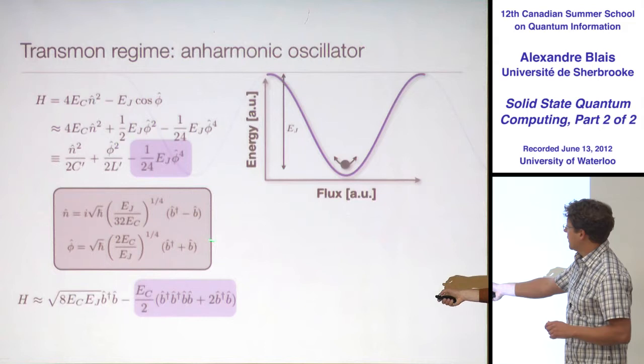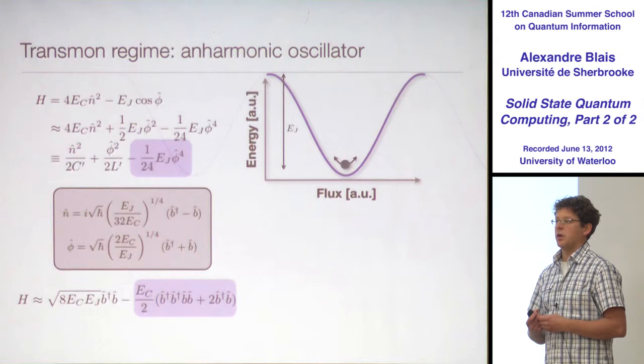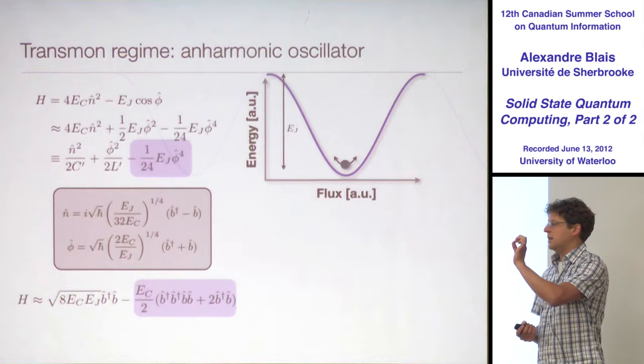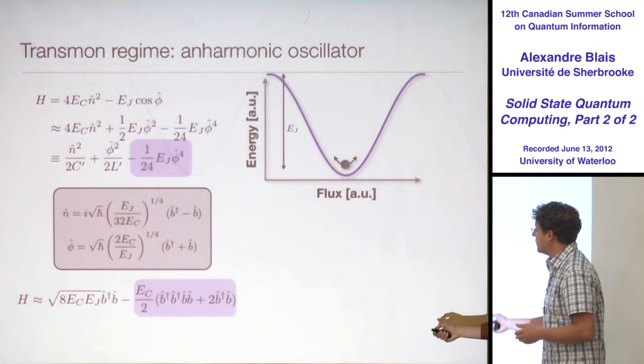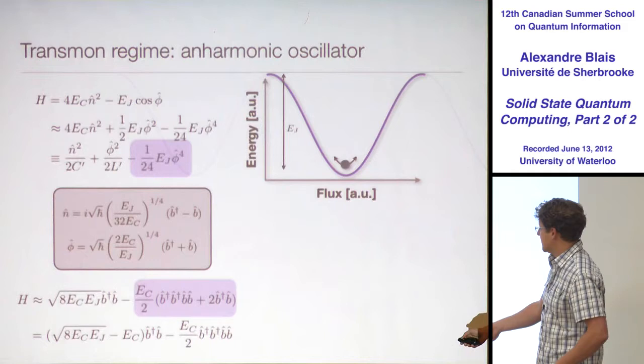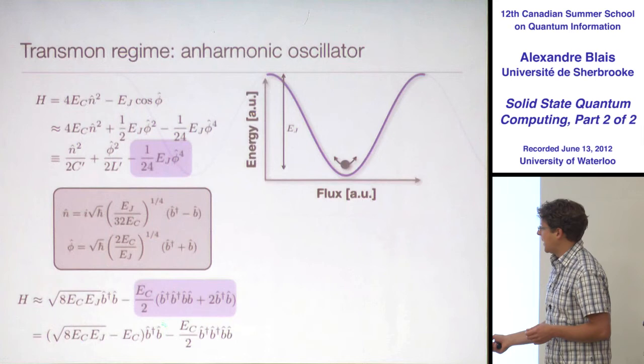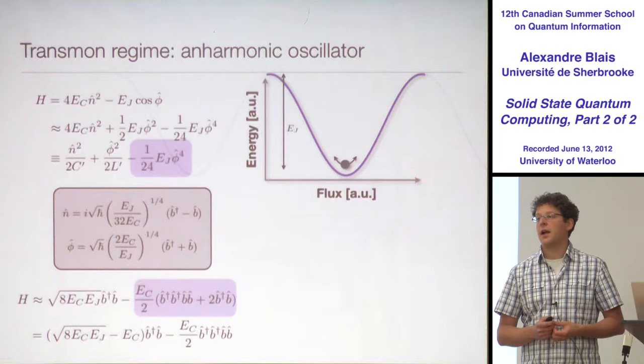The phi-to-the-fourth term gave me a bunch of terms because I took the fourth power. It gave me a bunch of terms, and in the same way as in Chris Monroe's talk yesterday, I'll get rid of some of these terms using the rotating wave approximation. Whenever a term doesn't have the same number of B-daggers as Bs, I'll drop it. The phi-to-the-fourth term gives me a small correction EC to the plasma frequency.